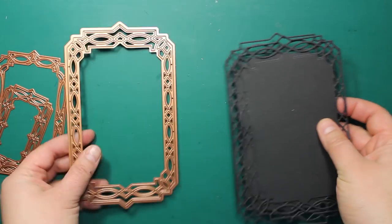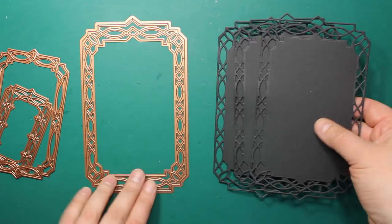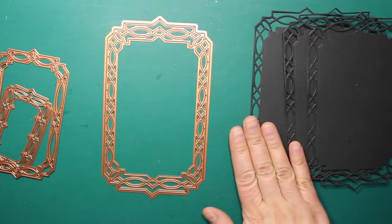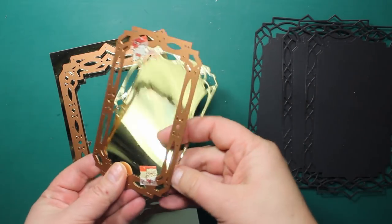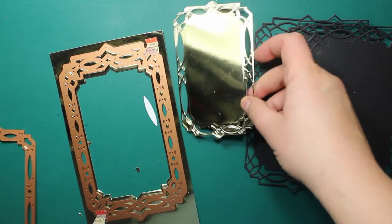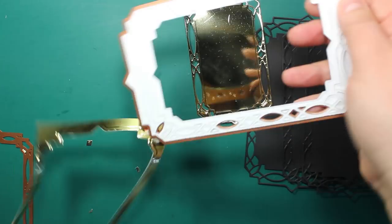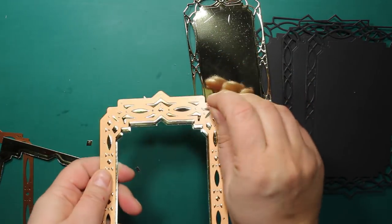For the card base I'll use this die set by Spellbinders called Astoria Decorative Element. I've cut three largest frames out of black cardstock. Then I used the large frame together with the medium one to create an open frame out of gold mirror cardstock.